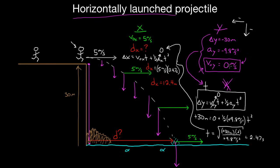Long story short, the mistakes you want to avoid are: make sure you plug in a negative displacement because you fell downward. But the big one is — make sure you know that the initial vertical velocity is zero, because there was only horizontal velocity to start with. That's not going to be given explicitly; you're just going to have to provide that from your own knowledge of physics.